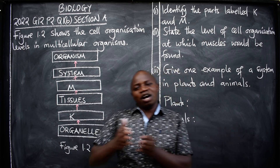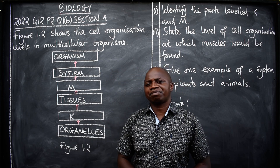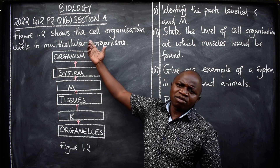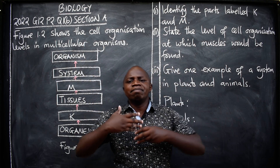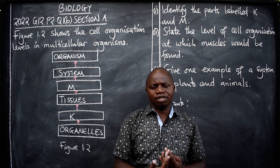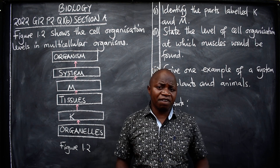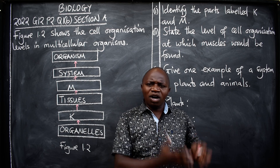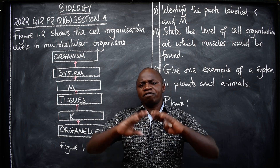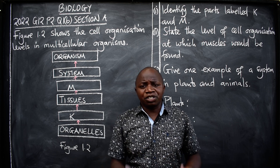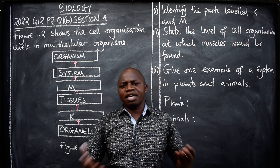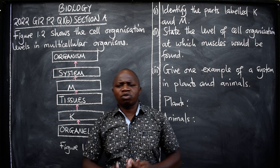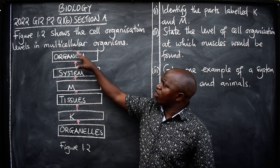Remember, we have multicellular organisms and we also have unicellular organisms. Multicellular organisms are organisms that have many cells in their bodies that perform different functions. Unicellular organisms, on the other hand, are those that have only one cell that performs all tasks — like bacteria, amoeba, and many others. Multicellular organisms include human beings, plants, and many others.